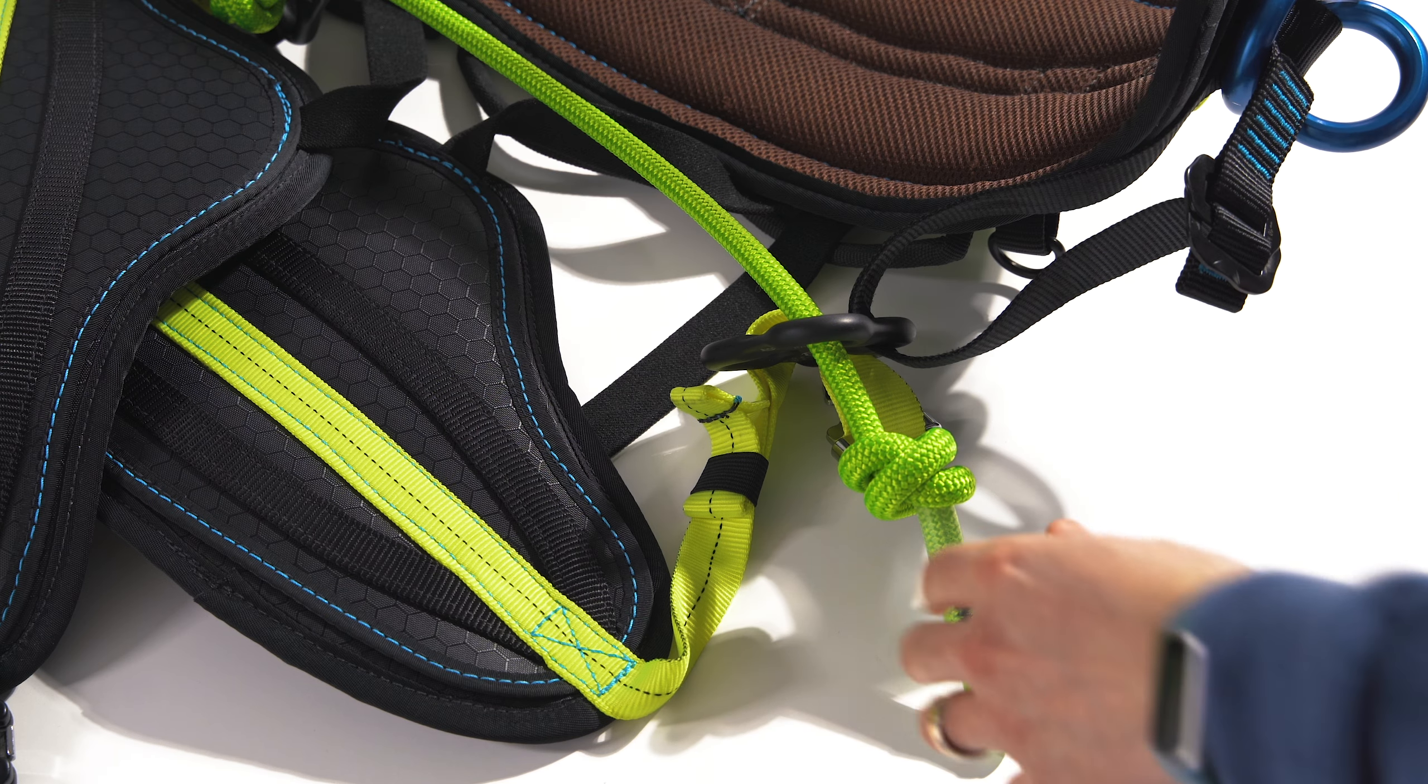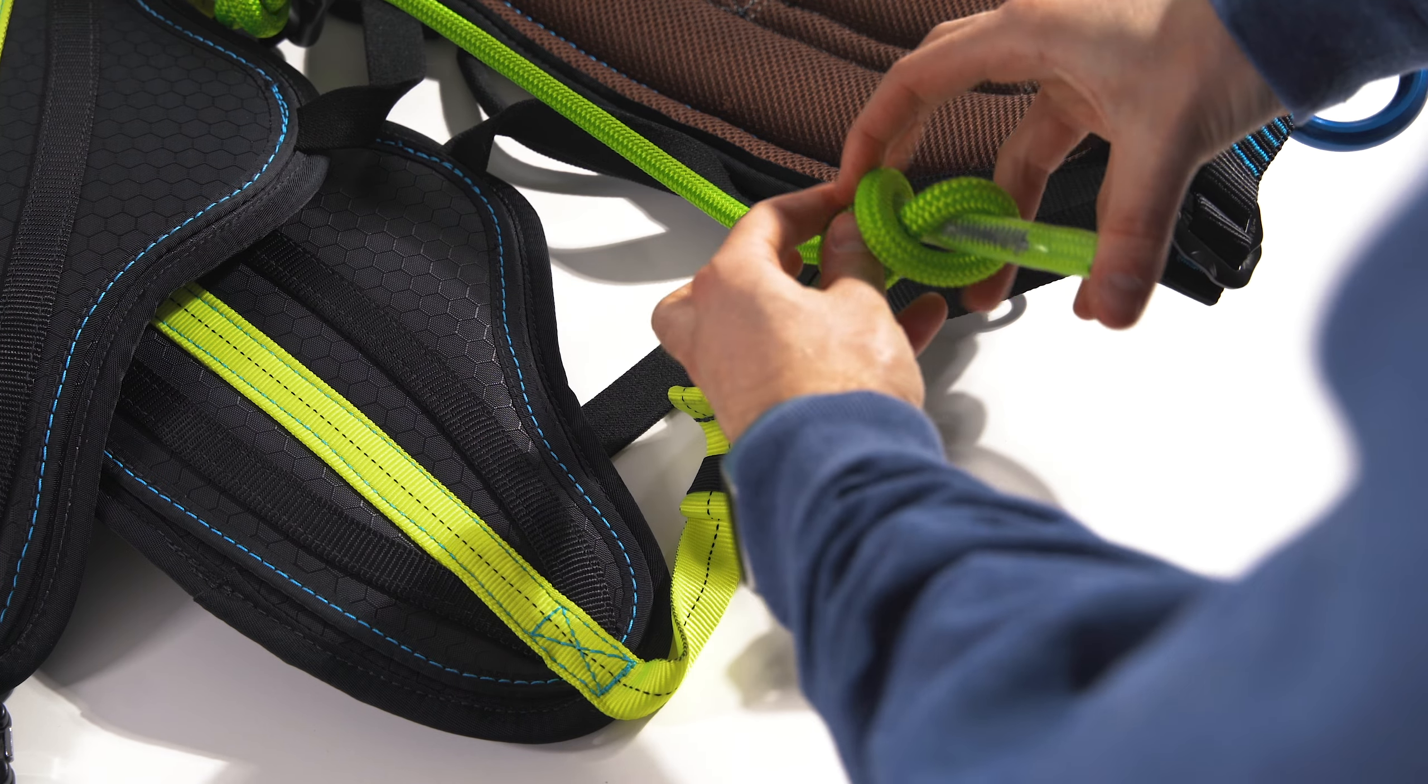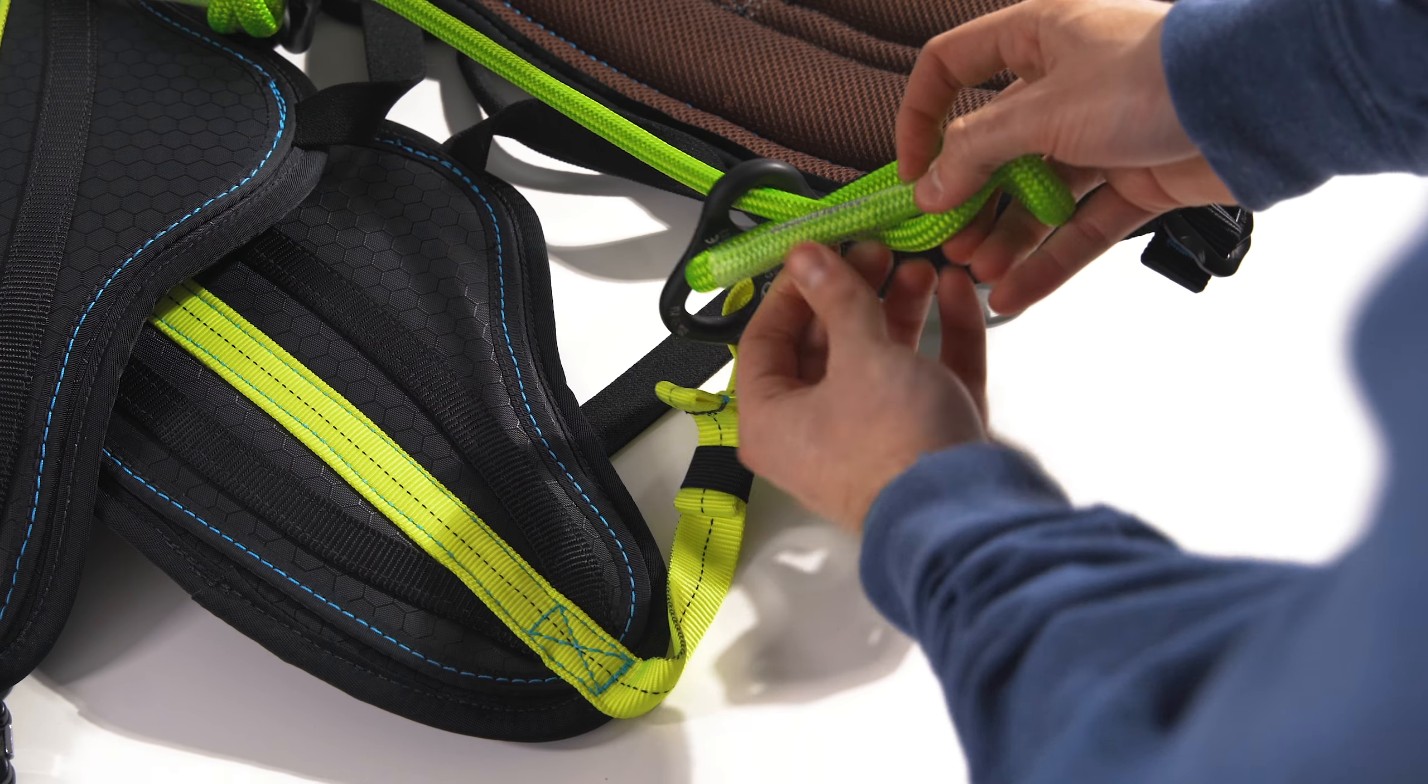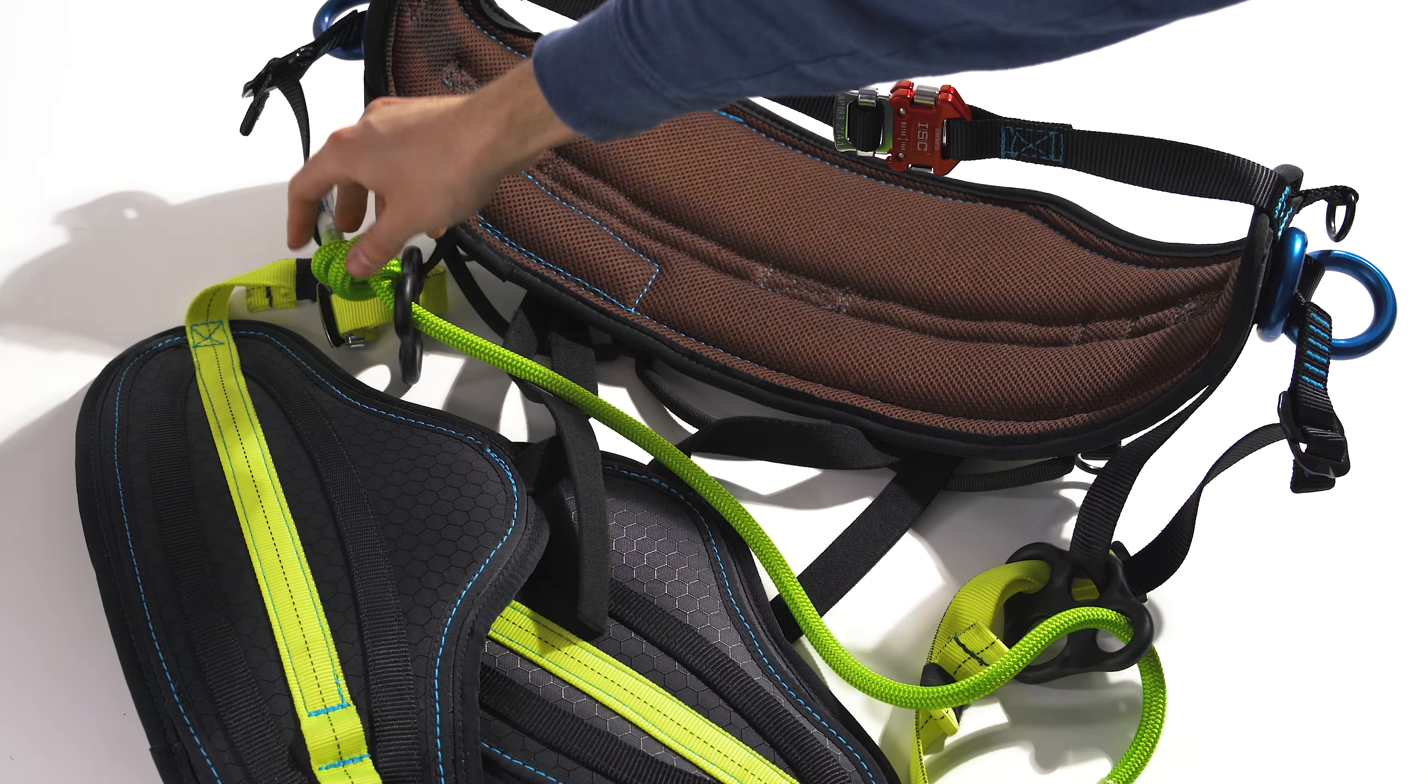To remove and replace the rope bridge on the Stratus saddle, begin by untying the double overhand stopper knot on one side of your rope bridge, then pull it out through both rigging plates.